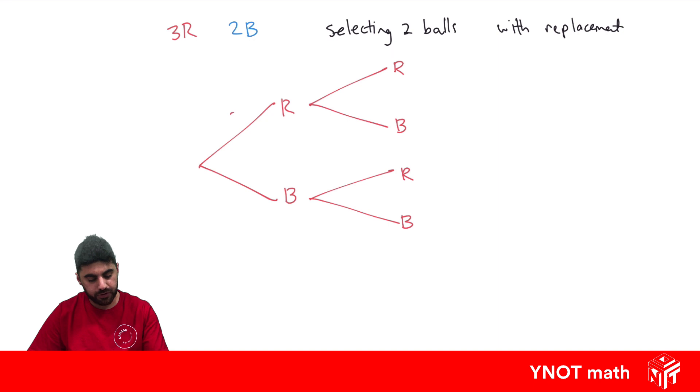So probability of selecting a red ball first is three out of five. Because there's three red balls, five in total. Blue is two out of five. And because we're putting it back, the probability of the second red ball is the same. It's three out of five. Blue is two out of five. Red's three out of five. And blue is two out of five.